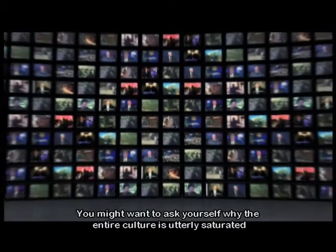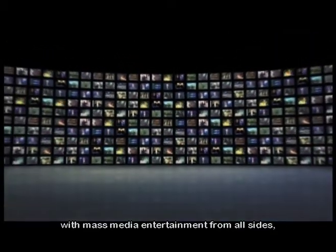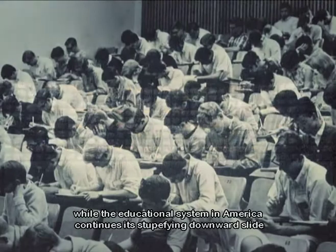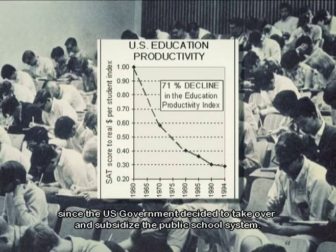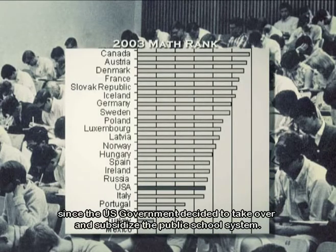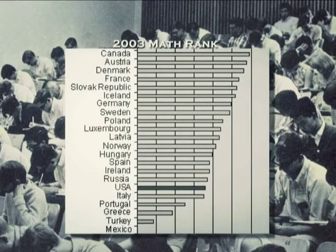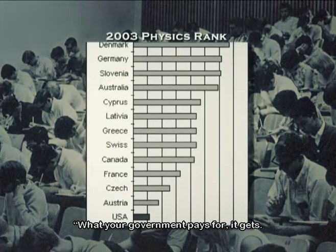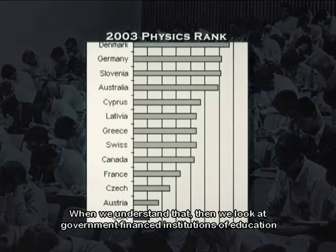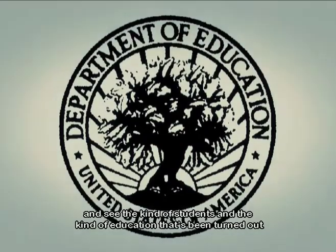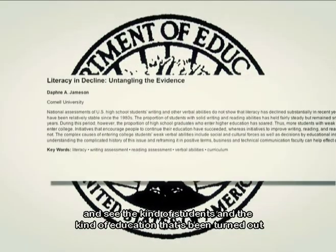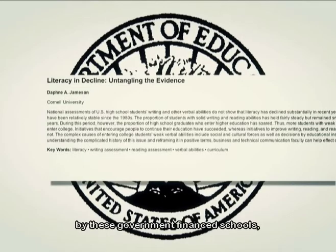You might want to ask yourself why the entire culture is utterly saturated with mass media entertainment from all sides, while the educational system in America continues its stupefying downward slide since the U.S. government decided to take over and subsidize the public school system. What your government pays for, it gets. When we understand that, we look at government-financed institutions of education and see the kind of students and education being turned out by these government-financed schools.